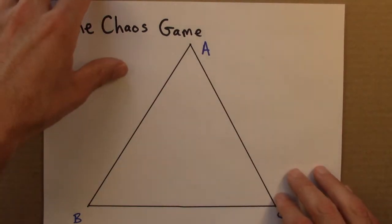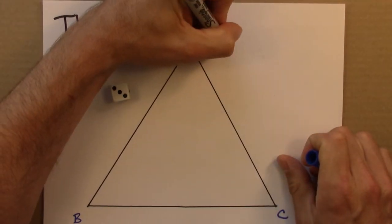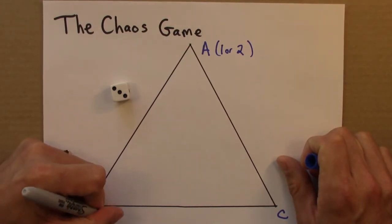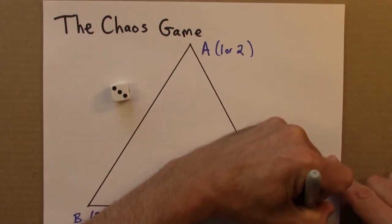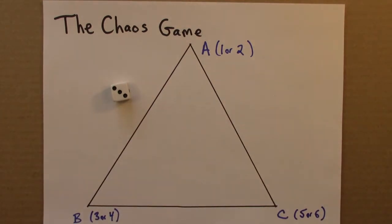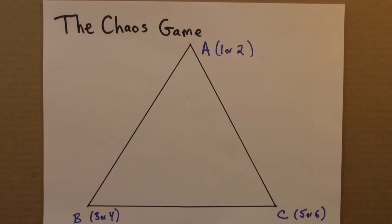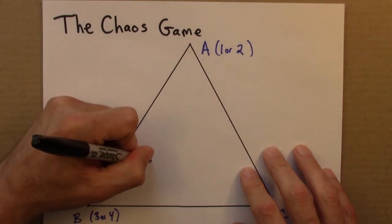So the easiest way to see how this works is to just do it. I'm going to choose which corner to go to by rolling a die, and I'll say that if I get a 1 or a 2, I'll go towards A, 3 or 4, I'll go to B, and 5 or 6, I'll go towards C. Alright, so I'm going to choose my starting point. It doesn't really matter where we start, I'll say there. A little more visible.